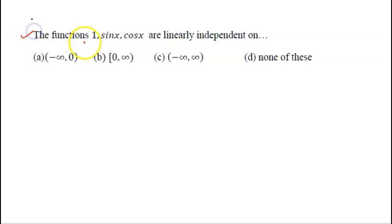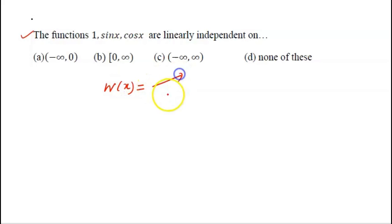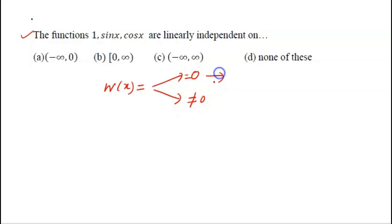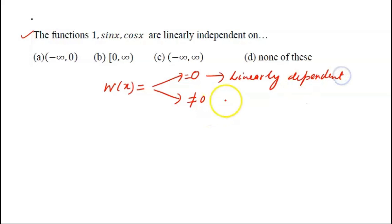This kind of question is also very important: checking whether functions are linearly independent. To check linear dependence or independence, we calculate the Wronskian value. If the Wronskian equals 0 in an interval, the functions are linearly dependent. If it is not equal to 0, then the functions are linearly independent in that interval.